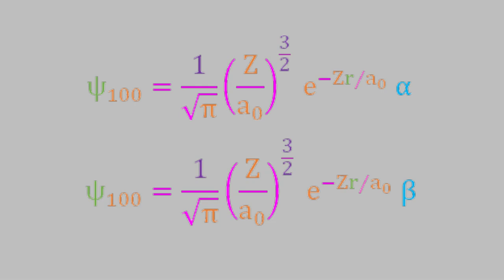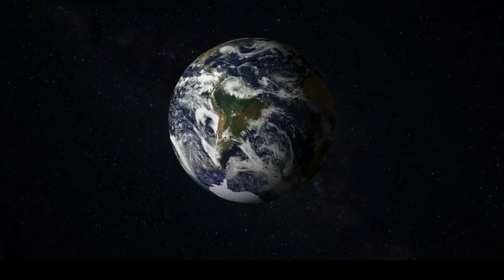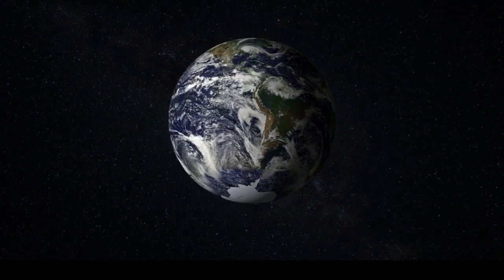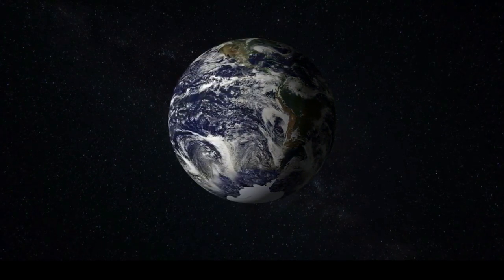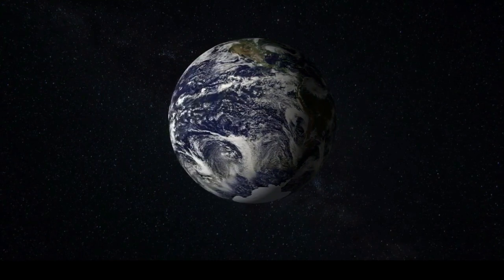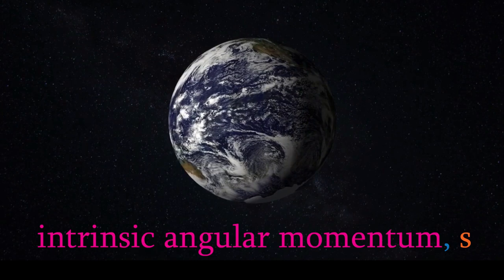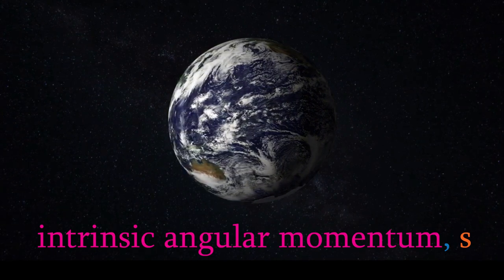Again, the reason we call this property spin is because the electron behaves as though it were rotating around an axis, much like a spinning top, or the rotation of the earth around its axis. The result is that the electron has what's known as an intrinsic angular momentum, and that's what's represented by the quantum number s.